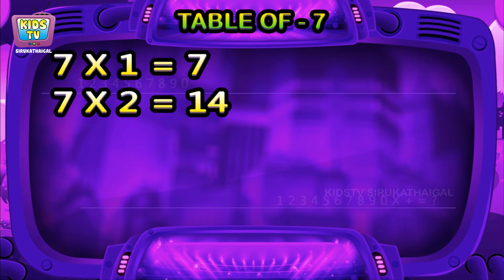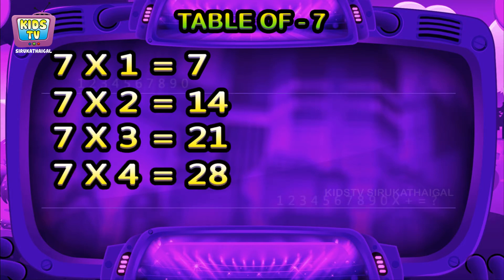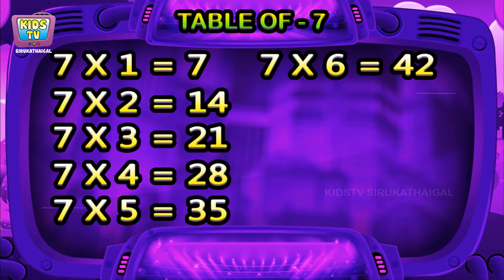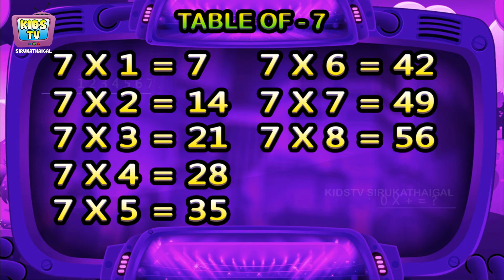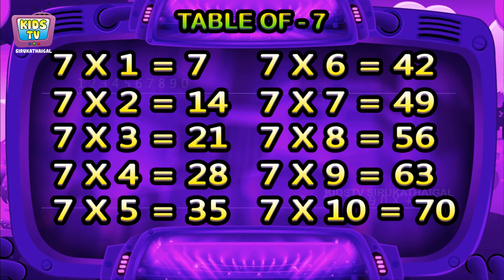Seven ones are seven, seven twos are fourteen, seven threes are twenty-one, seven fours are twenty-eight, seven fives are thirty-five, seven sixes are forty-two, seven sevens are forty-nine, seven eights are fifty-six, seven nines are sixty-three, seven tens are seventy.